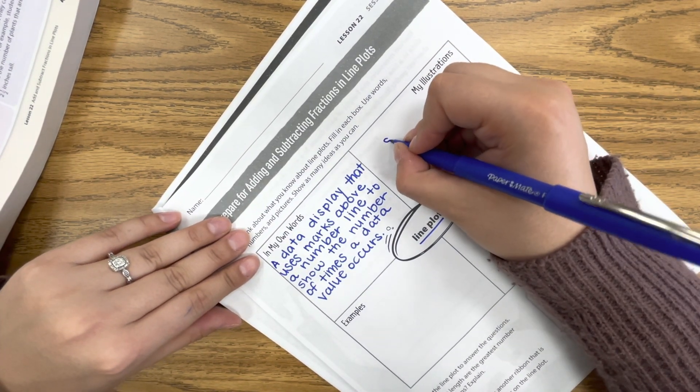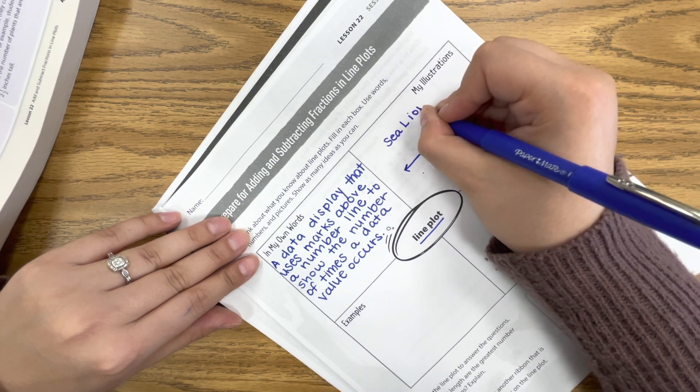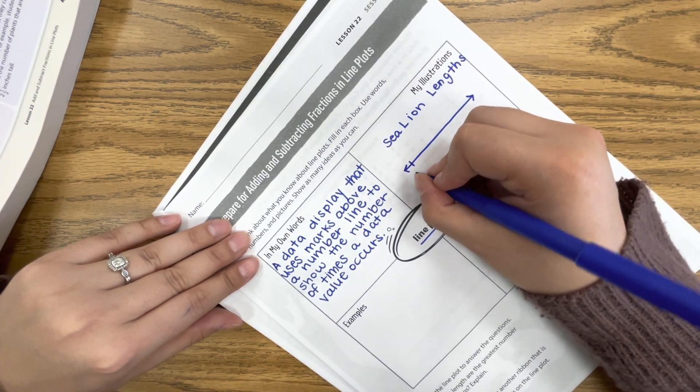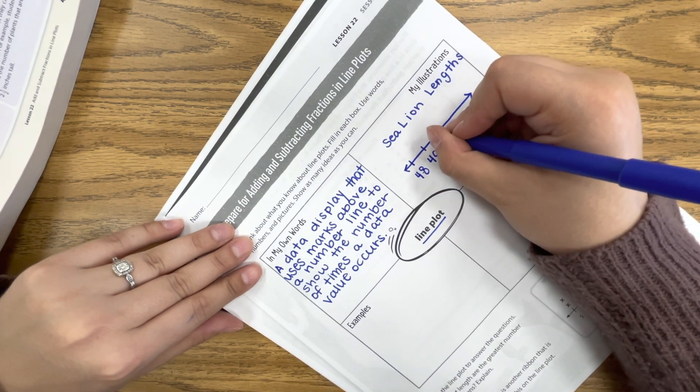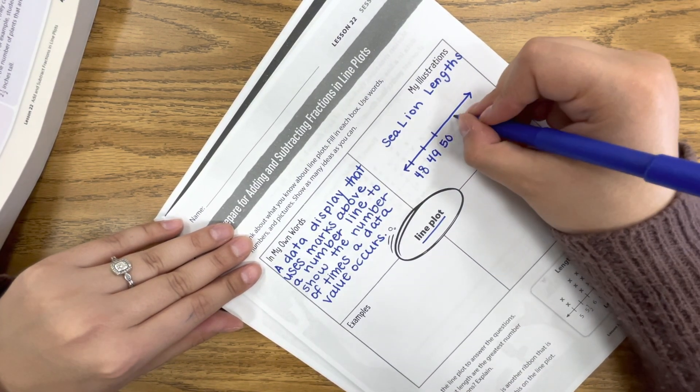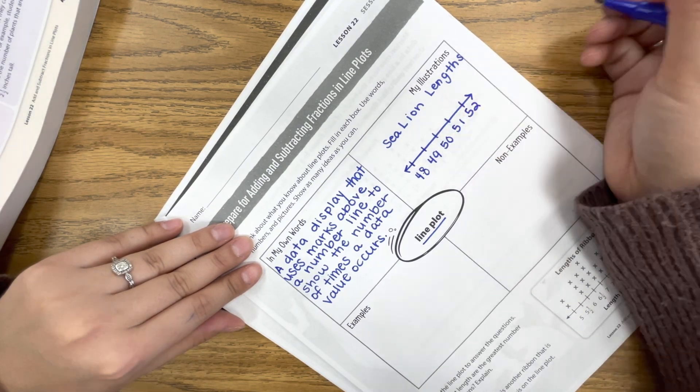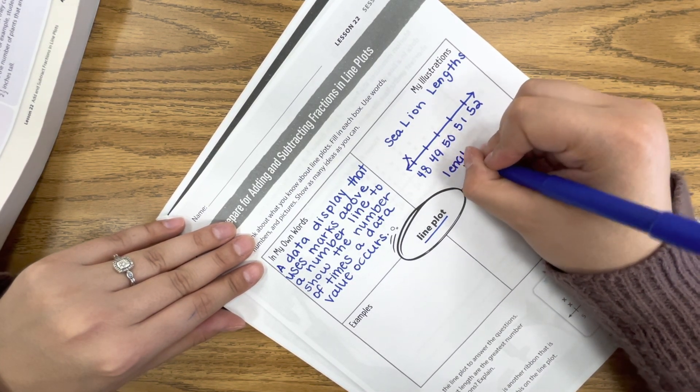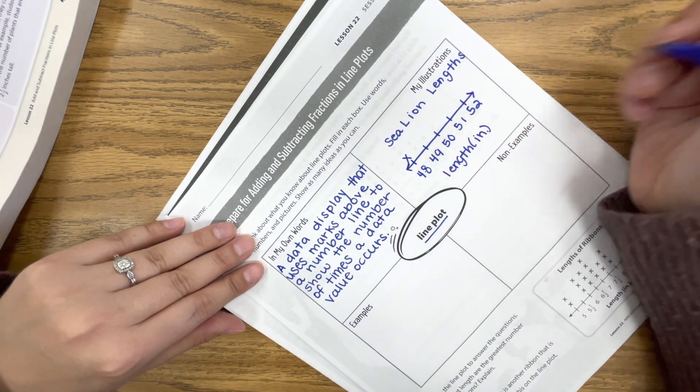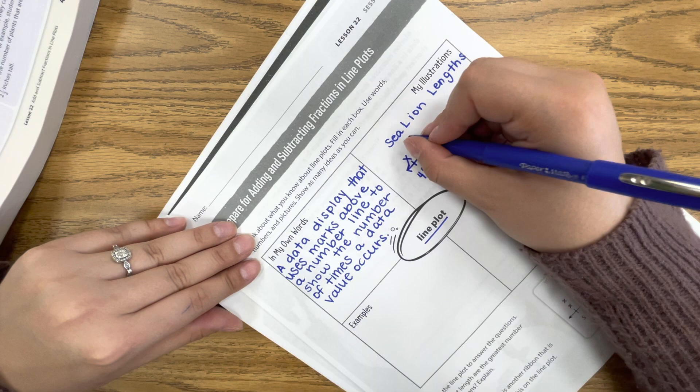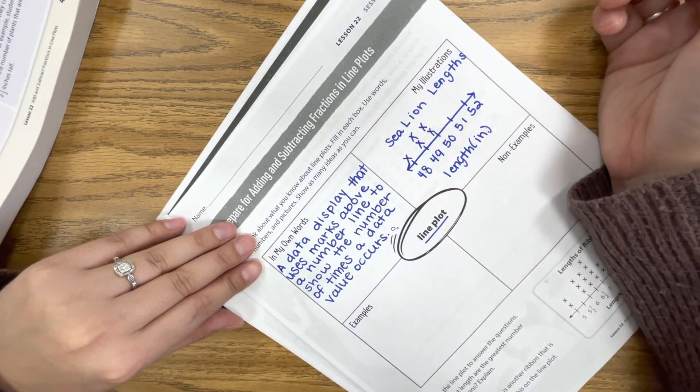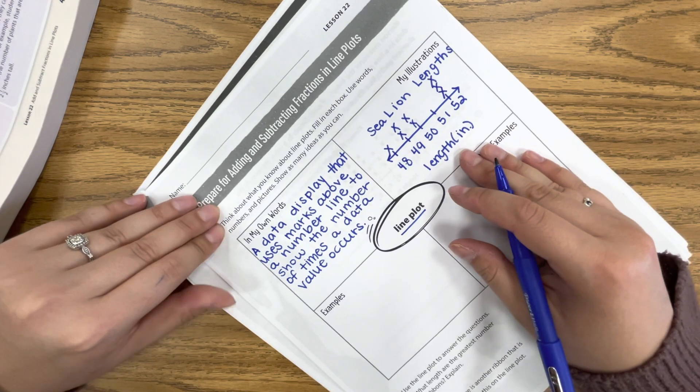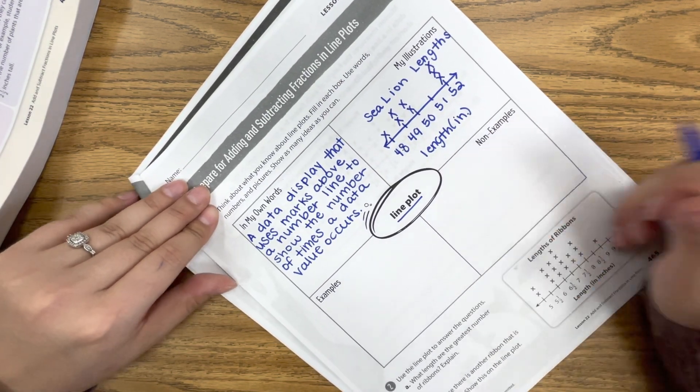And we're going to do, instead of worm lengths, we're going to do sea lion lengths. Just mix it up a little, you know? And we have 48, 49, 50, 51, and 52. And we'll say one is 48. Oh, but I forgot to label my other axis. Sorry, friends. We have the length in inches. So we have one 48 inches. We have two 49 inches. We'll say two 50-inch ones. We have none that are 51 inches long, but then we have three that are 52 inches long. So this is just an example of a line plot with some sort of data in it.